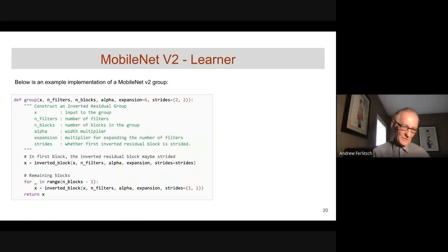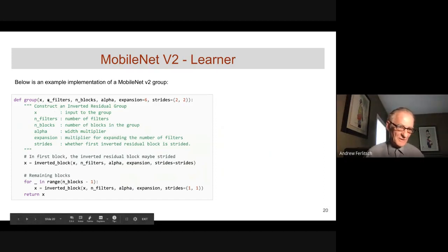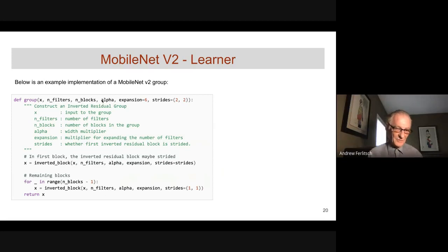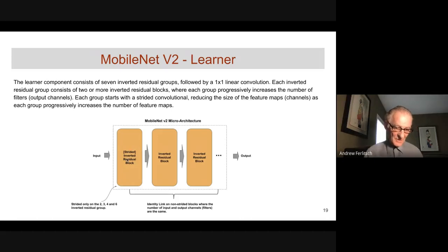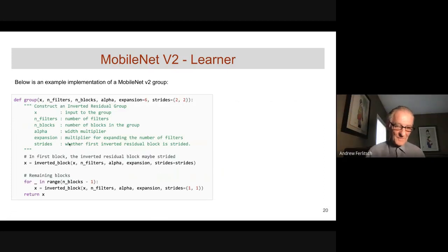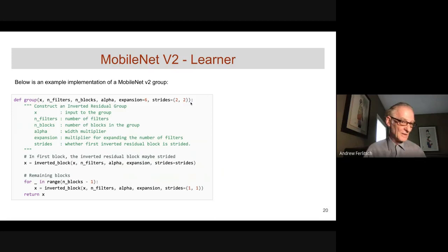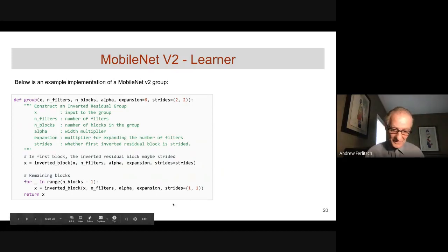In the group function code, inputs are the input tensor, number of filters, number of blocks, alpha for thinning, expansion (used in the block for dimensionality expansion), and whether the group starts with a strided convolution. The first inverted block is called separately, passing the appropriate stride value — 2×2 if strided, 1×1 if not. All remaining blocks (n_blocks minus one) are unstrided.